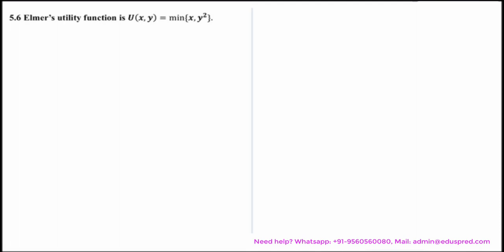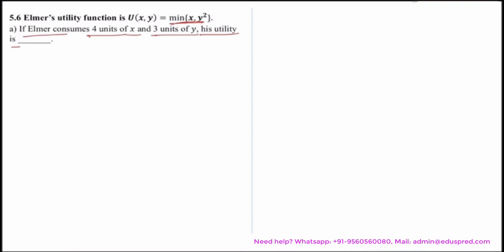We would be solving this question which says Elmer's utility function is u of x, y is equal to minimum of x, y squared.